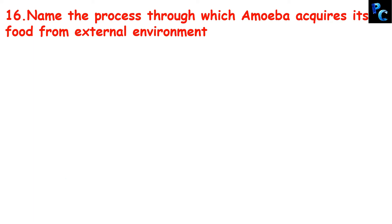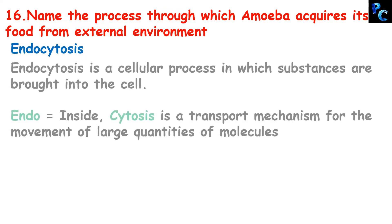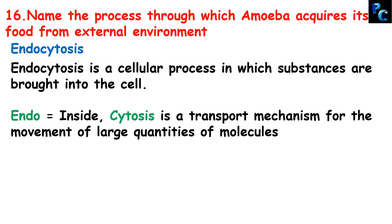Name the process through which amoeba acquires its food from the external environment. The answer is endocytosis — a cellular process in which substances are brought into the cell. Endo means inside, and cytosis is a transport mechanism for the movement of large quantities of molecules. So amoeba acquires food from the external environment by the process of endocytosis.